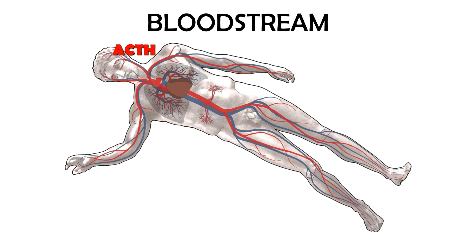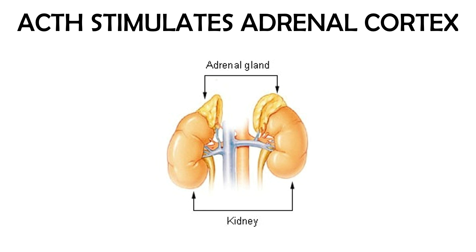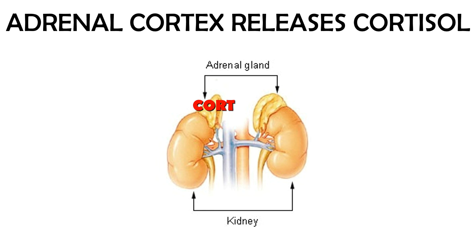ACTH travels through the bloodstream to the adrenal glands. The adrenal cortex is then stimulated to release cortisol.